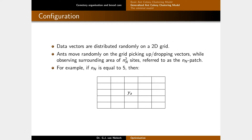The algorithm works by distributing your data in a 2D grid, similar to the basic ant colony clustering approach. Even though we work with a 2D grid, the vectors placed on it are of course multidimensional. The ants move randomly on the grid, picking up and dropping vectors based on probability, and they constantly observe an n-by-n patch. For example, if the patch size is 5, we get a 5×5 area — 25 positions the ant can observe.